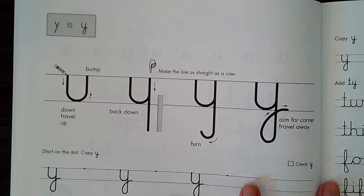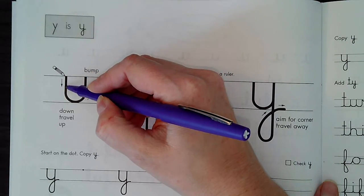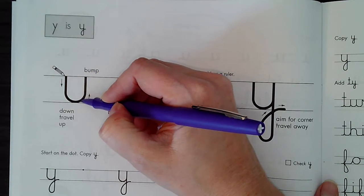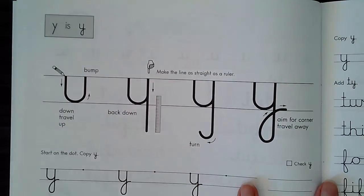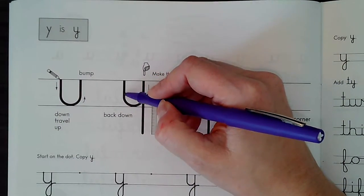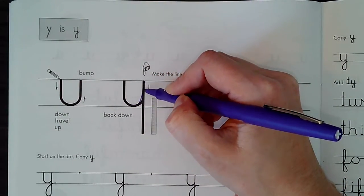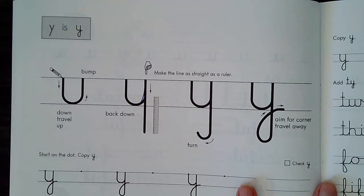Start on the top line, we go down straight and then we curve and travel back up. We're just going to bump that top line because after we bump that line we're going to go straight back down. Nice straight line.